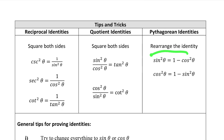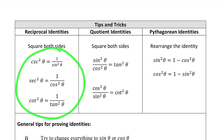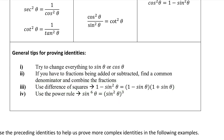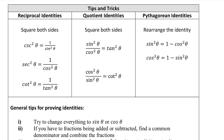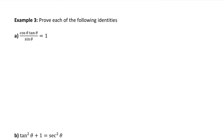Rearranging the Pythagorean identity could give us other versions of it. We could also square both sides of the quotient identities, or square both sides of the reciprocal identities. Here are some helpful tips to follow while proving identities: it's often useful to change everything to be written in terms of sine and cos. If you have fractions being added or subtracted, get a common denominator. Also look out for difference of squares, and don't forget your exponent rules.